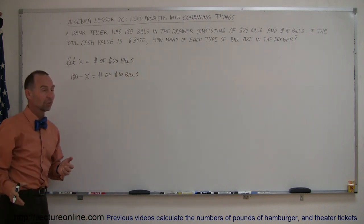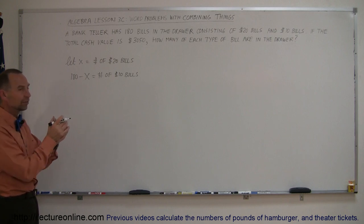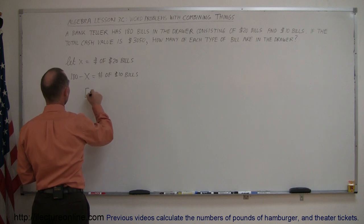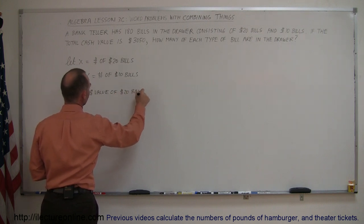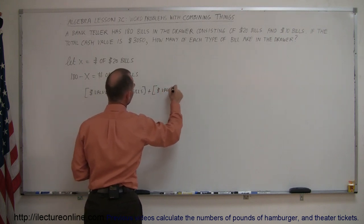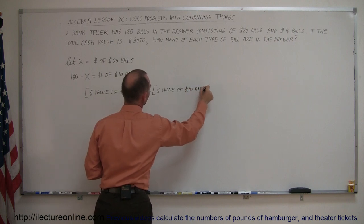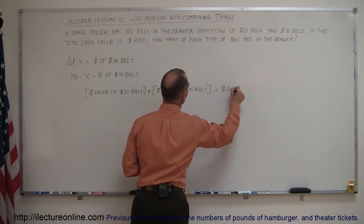Okay, now we're ready to set up an equation. We're told that the total cash value is $3,050. So the value of the $20 bills plus the value of the $10 bills equals $3,050. So the dollar value of the $20 bills plus the dollar value of the $10 bills has to add up to $3,050.